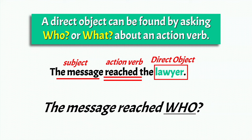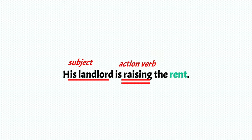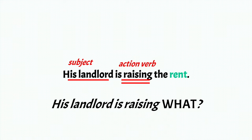A direct object can be found by asking who or what about an action verb. Another example: His landlord is raising the rent. His landlord is the subject. The action verb is raising. His landlord is raising what? The rent. So that's your direct object.